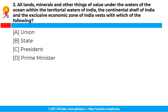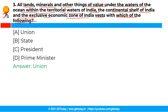The next question is: all lands, minerals and other things of value under the waters of the ocean within the territorial waters of India vest with which of the following? The correct answer is option A, that is the Union. All lands, minerals and other things of value under the waters of the ocean within the territorial waters of India, the continental shelf of India, and the exclusive economic zone of India vest in the Union and not in the states.